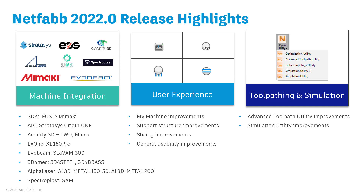The 2022 release improves existing integrations with EOS and Mimaki printers by utilizing the software development kit provided by those hardware partners. We also partnered with Stratasys to improve our existing integration with the Origin One printer, and we're releasing a native connection to the Origin Online platform, making it easier to set up your print jobs.